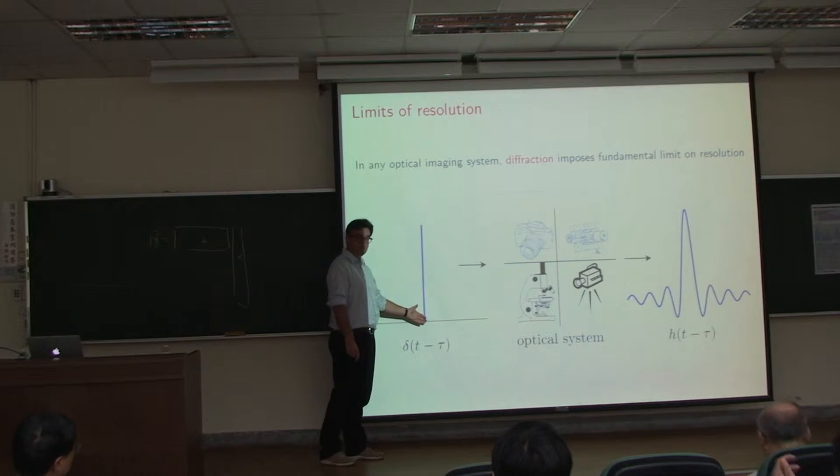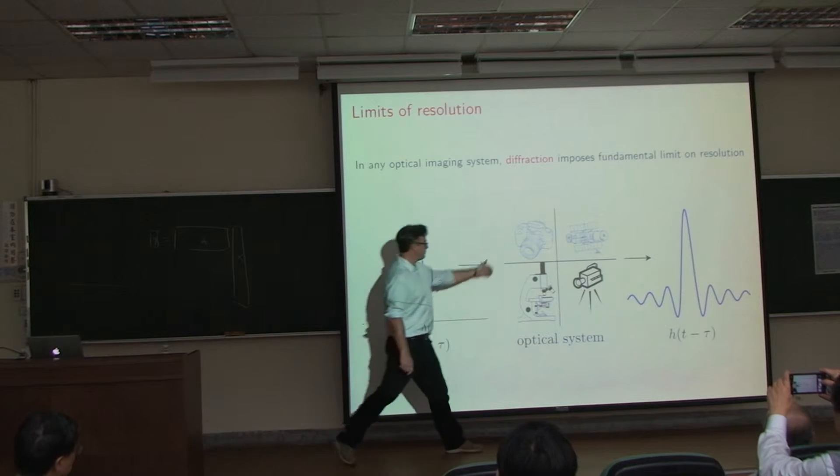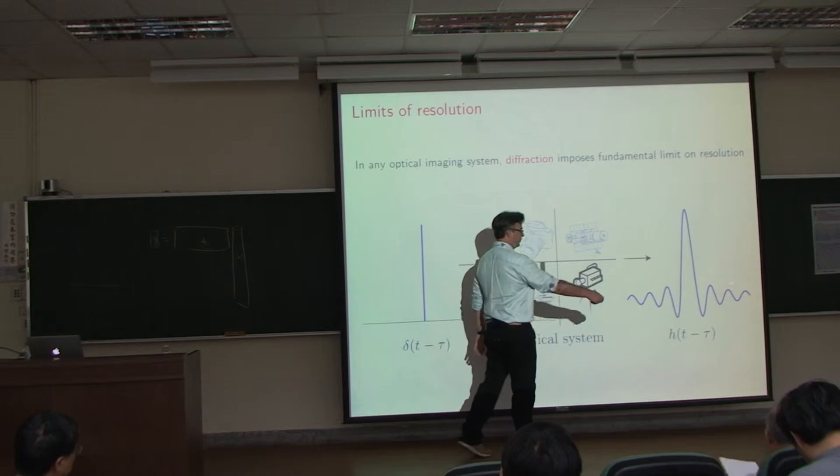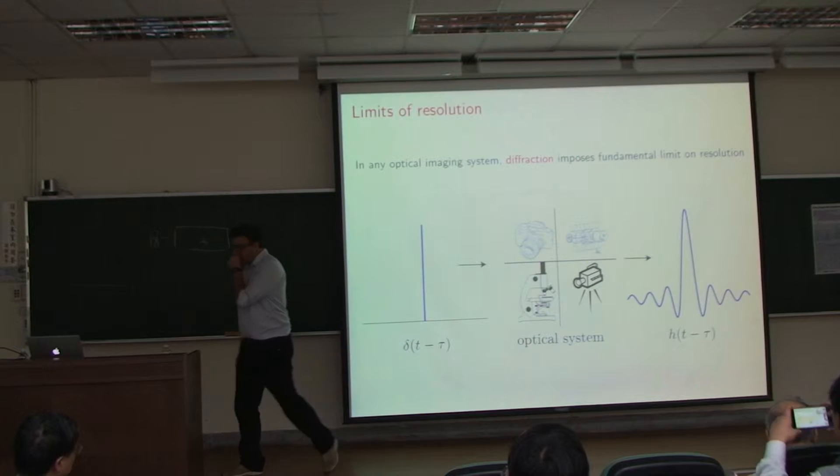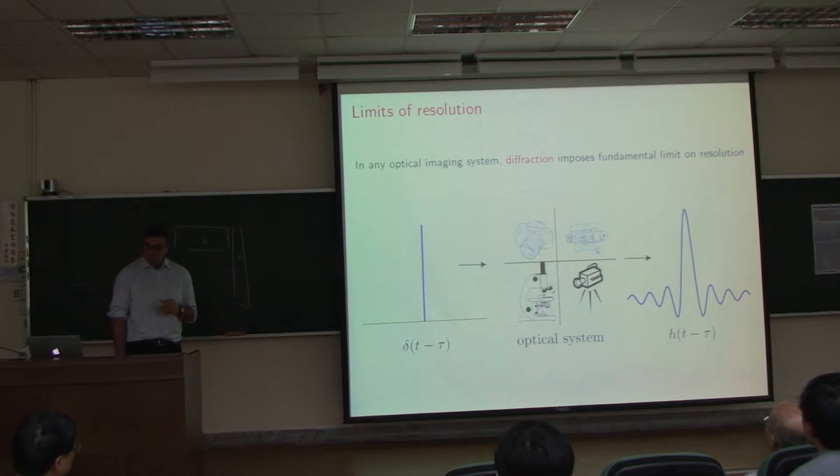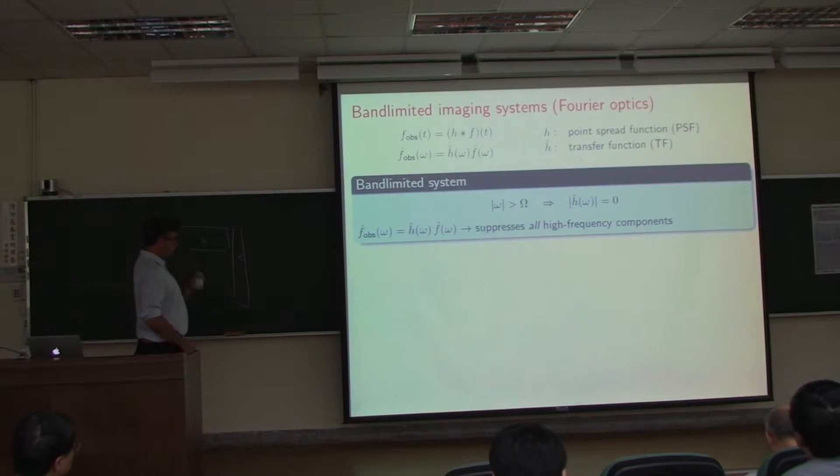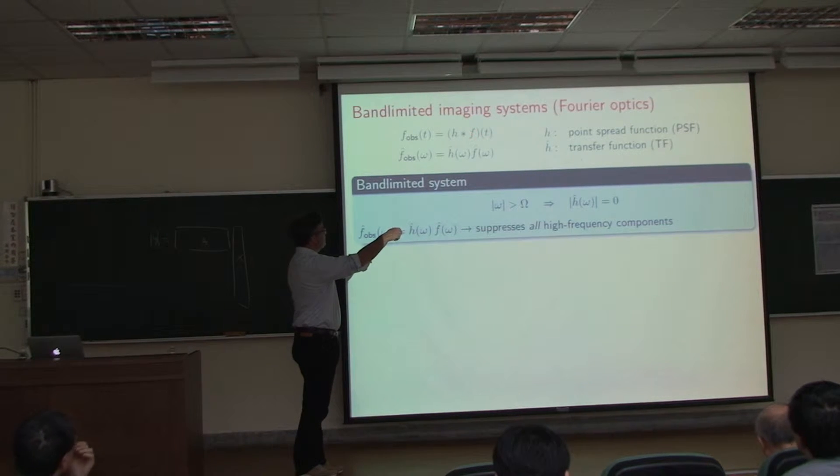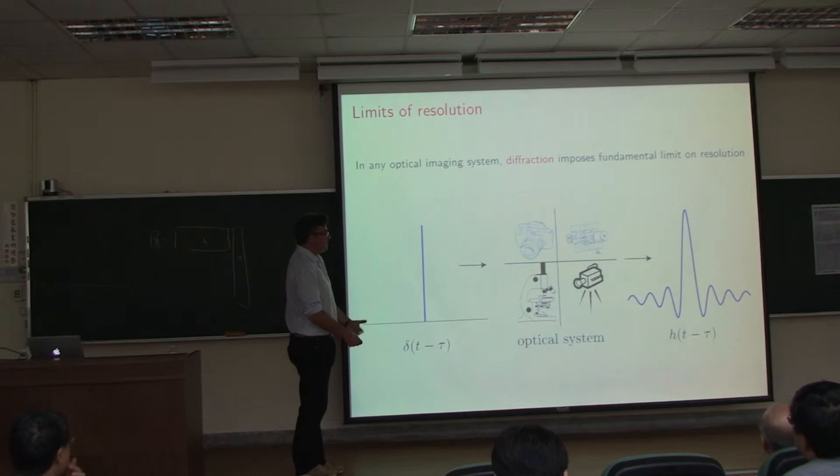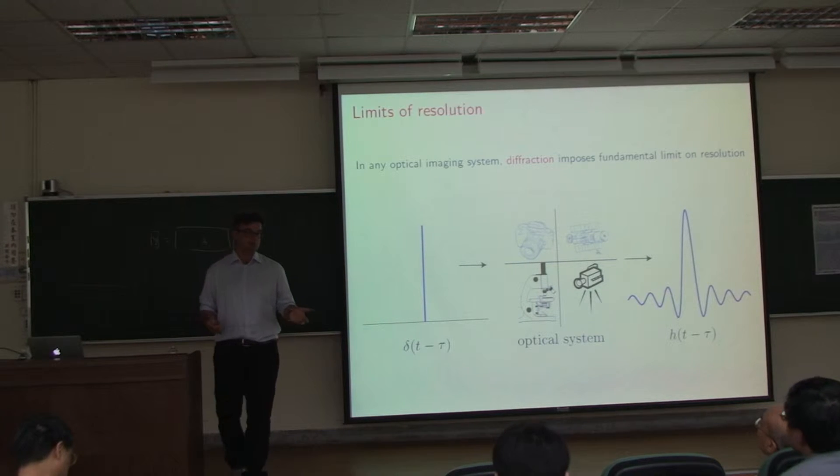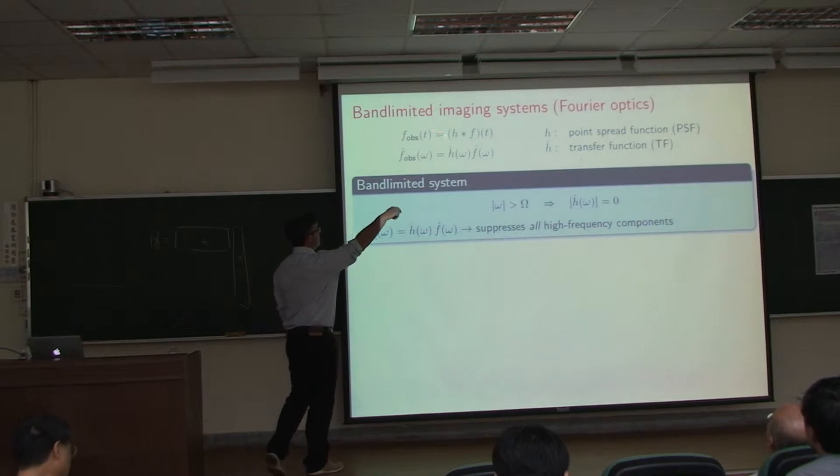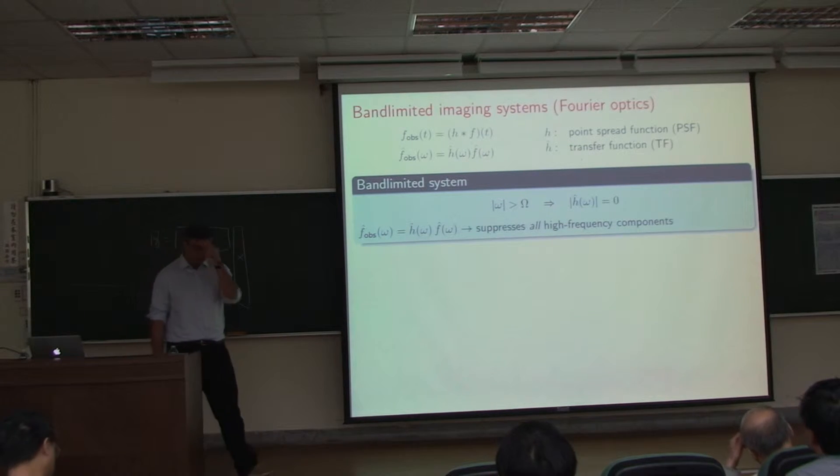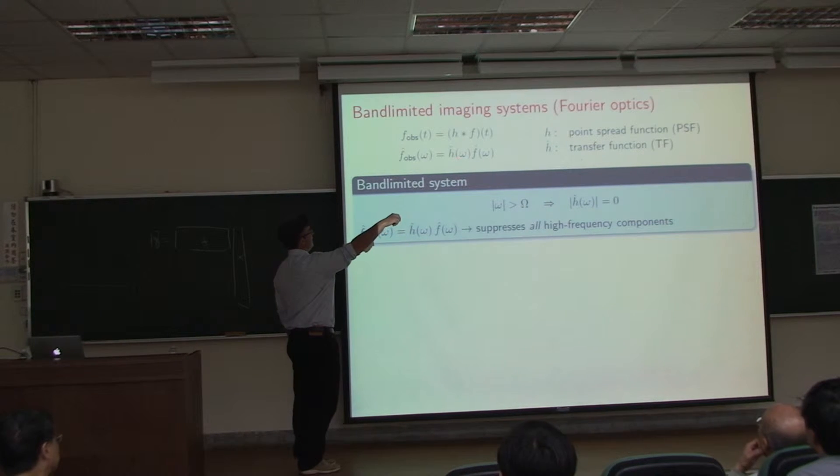You should have all seen in your courses that you have a point source that looks like this, and you're going to try to image it by a camera, telescope, or microscope. No matter what you use, the point source will not appear as a point source; it will appear as something that looks like this. In any optical imaging system, diffraction imposes a fundamental limit on image resolution. Mathematically, we have a band-limited imaging system where there's an object f that you care about, but you can only observe f convolved with a low-pass kernel—the point spread function. In the Fourier domain, convolution is multiplication, so I cannot observe the Fourier transform of the signal directly; I observe it multiplied by the transfer function.